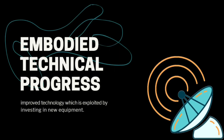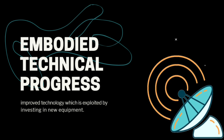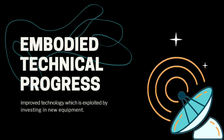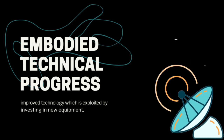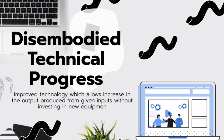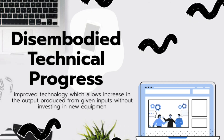The first is embodied technological progress — improved technology which is exploited by investing in new equipment. New technical change methods are embodied in the equipment. And the second is disembodied technical progress.